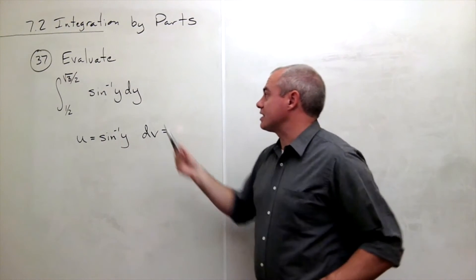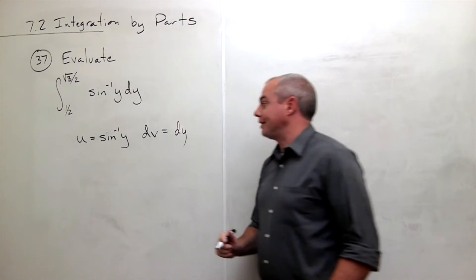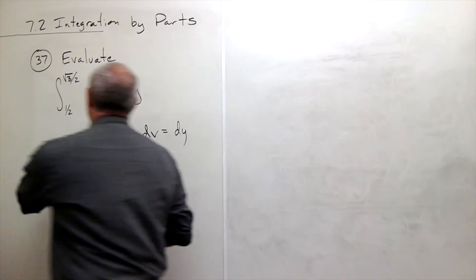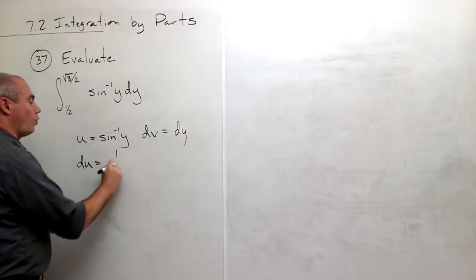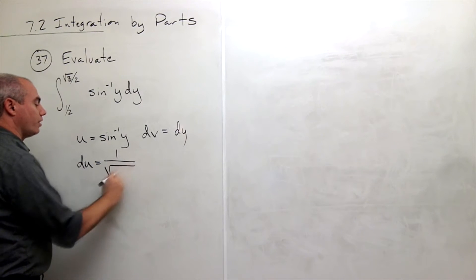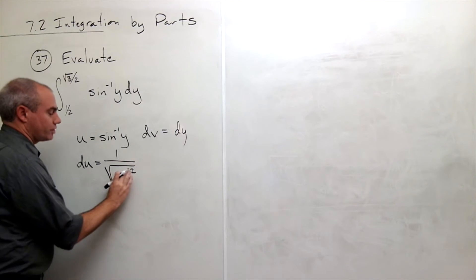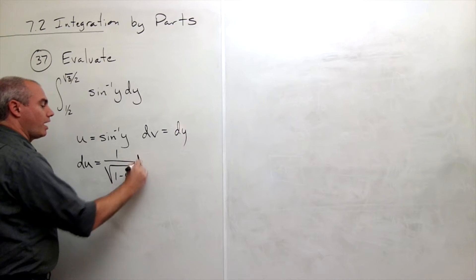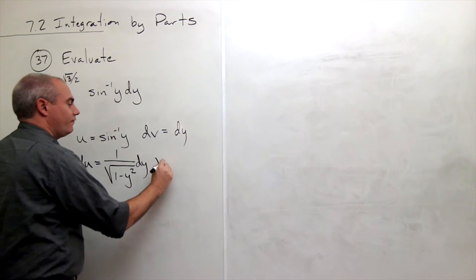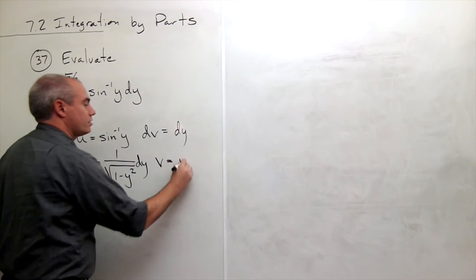That means that dv is everything else. In this case, everything else is just dy. The derivative, du, of sine inverse of y is 1 over square root of 1 minus x squared. Oh, sorry, not x squared, y squared, because we're in y here, dy. And v, the anti-derivative of 1, is just y.